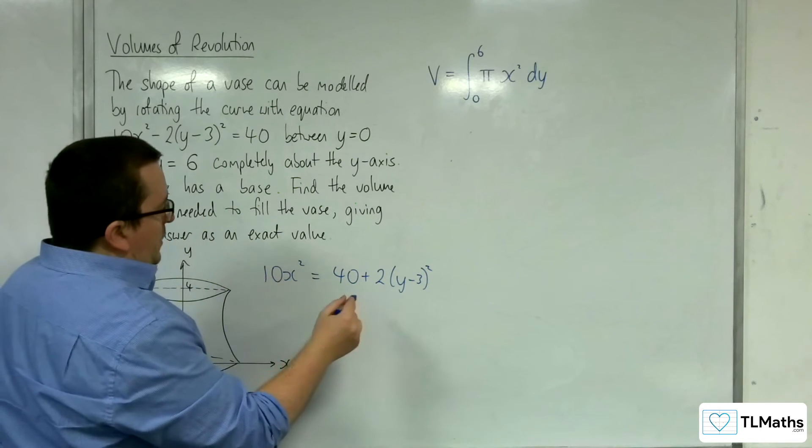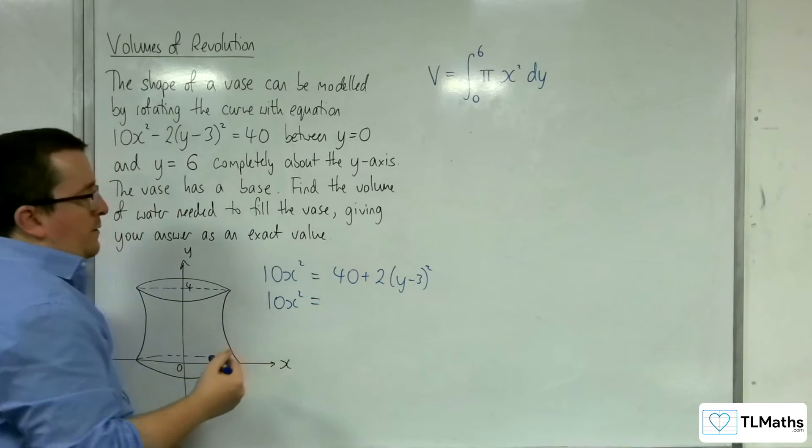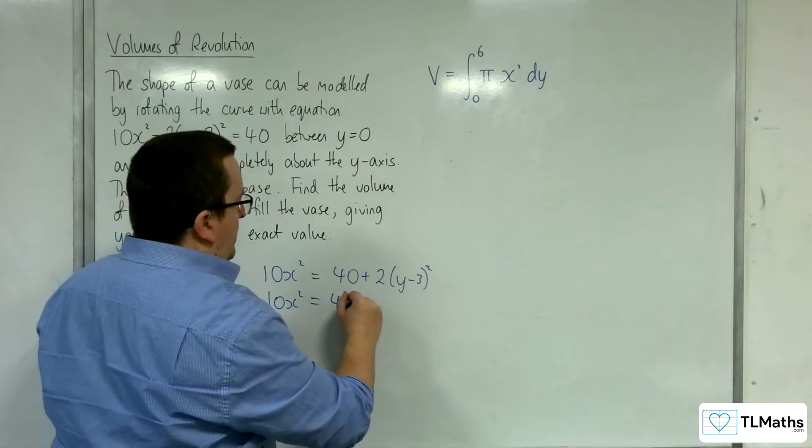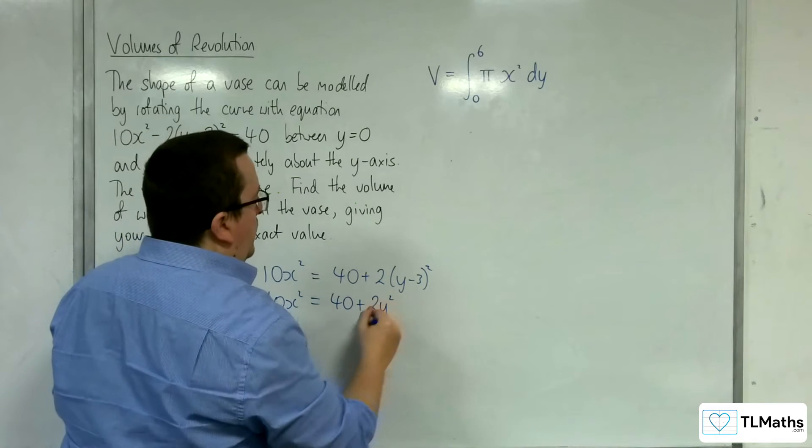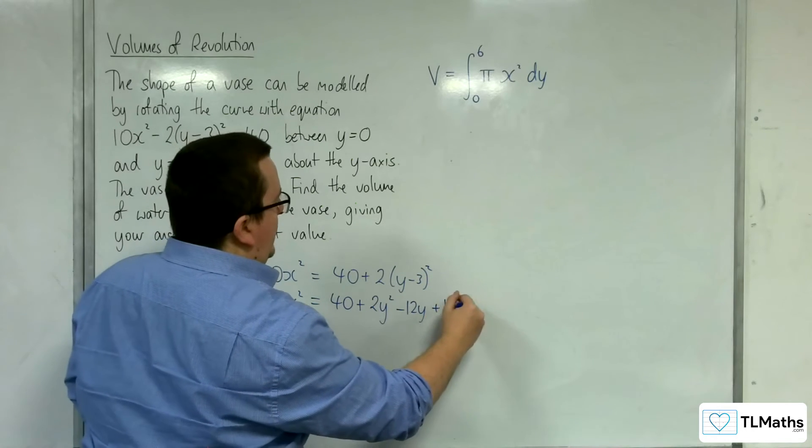Now, I could divide through by 10 first, but I think what I'll do is I'll expand this bracket out. So we get 40 plus 2y², take away 12y and plus 18.